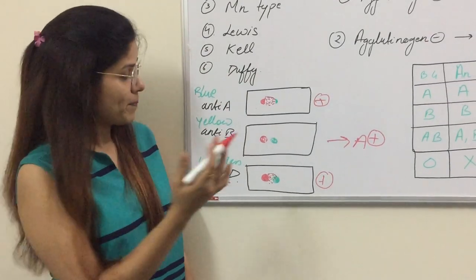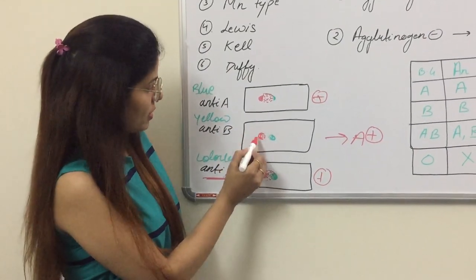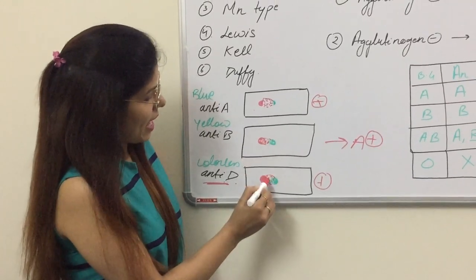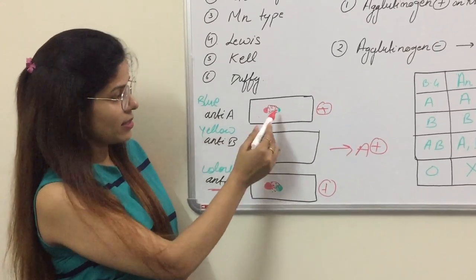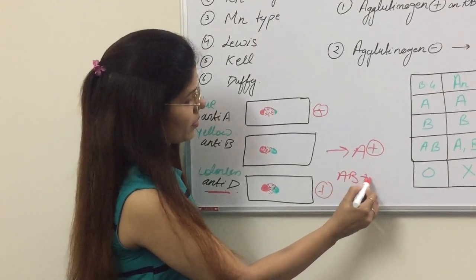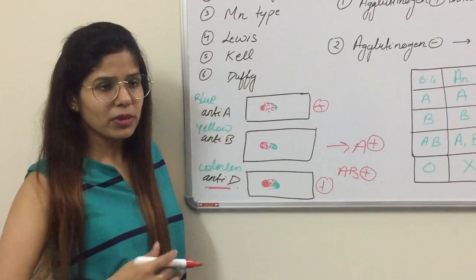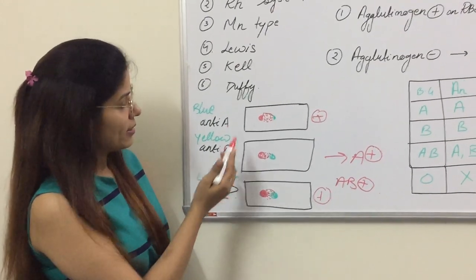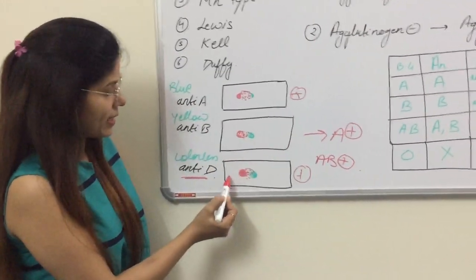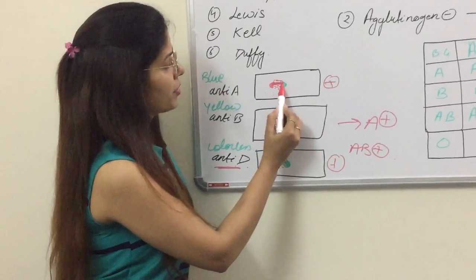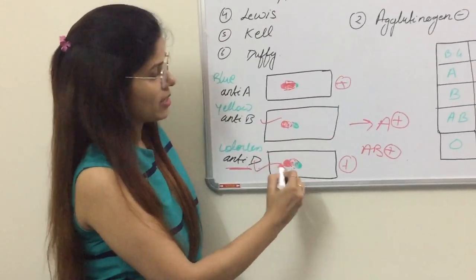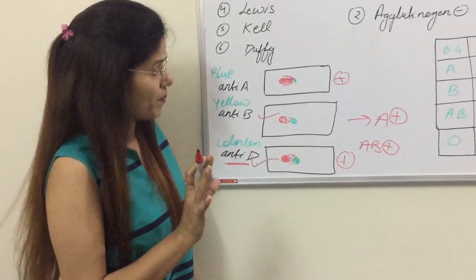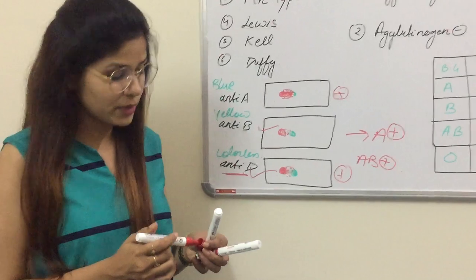If you got agglutination on anti-B as well as anti-D and anti-A, then this will be AB positive. Which is the commonest? The commonest is B positive, in which you will get agglutination on anti-B and anti-D. This is a brief about the blood group system.